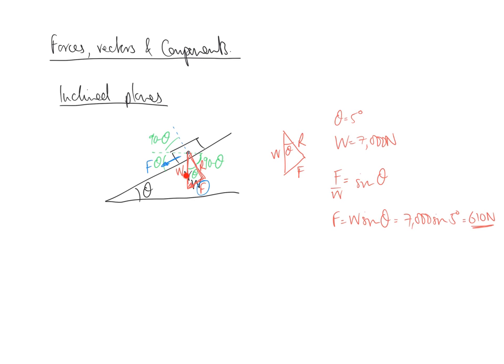That makes sense — because if the plane were to drop flat to zero degrees, then the weight would act vertically and there'd be no force down the slope. You might often be asked at what angle friction can no longer prevent slipping. That is essentially an inclined plane problem.